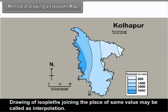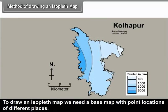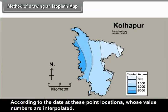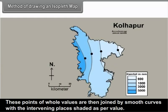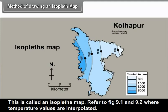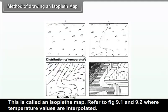Methods of drawing an isopleth map: Drawing isopleths by joining places of the same value is called interpolation. To draw an isopleth map, we need a base map with point locations of different places. According to the data, value numbers at these point locations are interpolated, and these points of equal values are then joined by smooth curves, with intervening places shaded as per value. This is called an isopleth map. Refer to figures 9.1 and 9.2 where temperature values are interpolated.